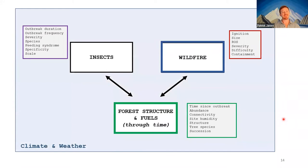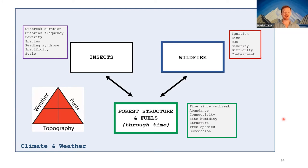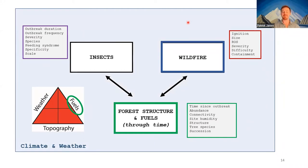Everything is shaped and influenced by climate and weather — we're just one component of the fire triangle of weather, fuels, and topography. Wildfire is very strongly shaped by weather, and under certain weather conditions I suspect the influence of fuels driven by insects has no consequence on fire dynamics — you'd be chasing a marginal proportion of variation in that wildfire measure under high fire weather conditions.